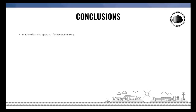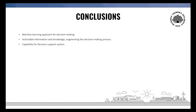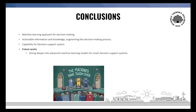The conclusions are that the machine learning approach can be used to extract useful information and support the decision making process. It also provides actionable information and knowledge, thereby augmenting the decision making process. The method provides a capability for creating decision support systems whereby cross-functional teams can share knowledge, data, and values, augmenting decision making ability. With the evidence of machine learning supporting the decision making process, it would be interesting to dive deeper into advanced machine learning models such as artificial intelligence for smart decision making within product development, or extending it to product service systems.